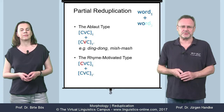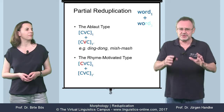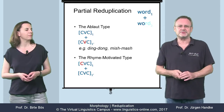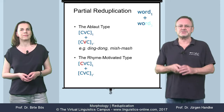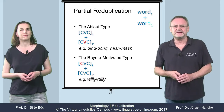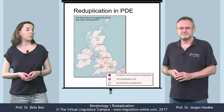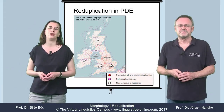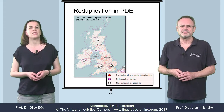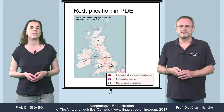The second type of partial reduplication is a rhyme-motivated operation. Here, the onset consonant changes while the rest of the word is repeated. Thus, we are confronted with a rhyme effect as in willy-nilly or walkie-talkie. In present-day English, however, reduplication is not a productive morphological operation, and it's thus considered marginal as far as linguistic usage is concerned.